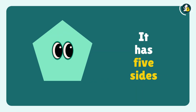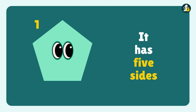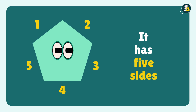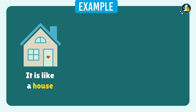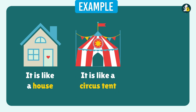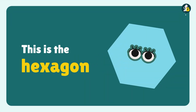Wow! This is Pentagon. A pentagon has five sides: one, two, three, four, five. For example, a house, like a circus tent, like a carousel. These all have pentagon shapes.